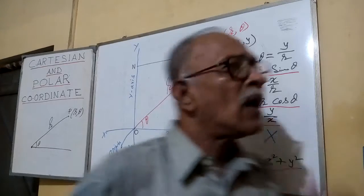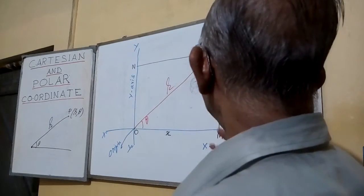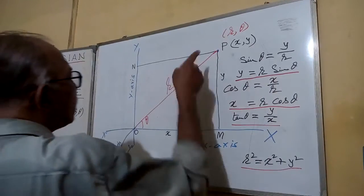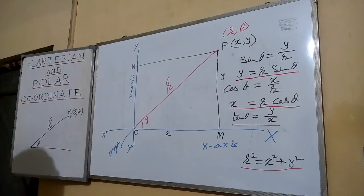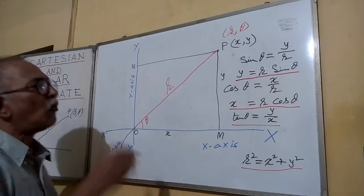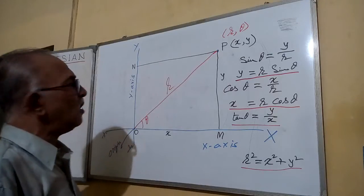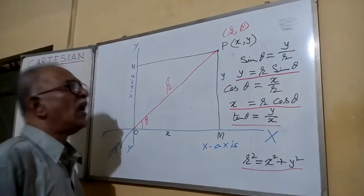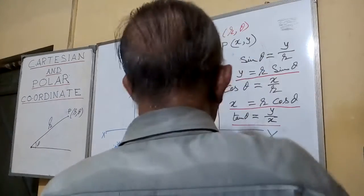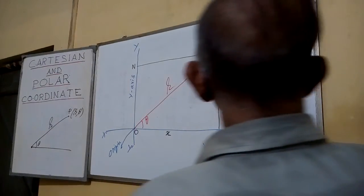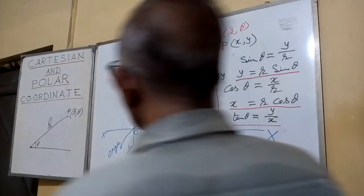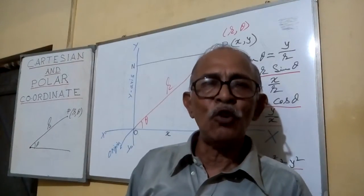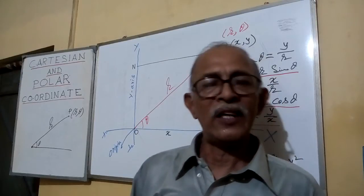Here x and y are the Cartesian coordinates — x is known as the abscissa and y is known as the ordinate. And R, theta is the polar coordinate, where R is known as the radius vector and theta is the vectorial angle. This is the relationship between Cartesian and polar coordinates. If you know R and theta, you can find x and y to get the Cartesian coordinates. And if you know x and y, you can find R using R squared equals x squared plus y squared, and then find theta. So you can easily convert from one system to another. Thank you.